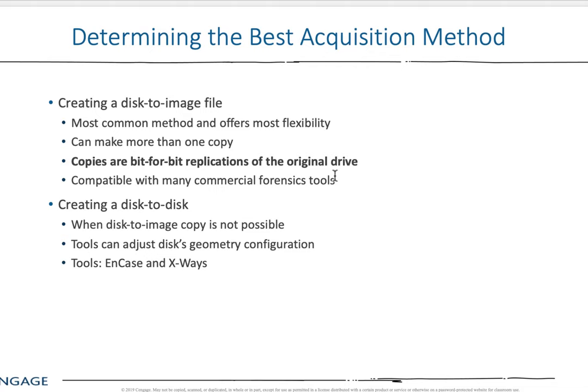Store your bit copy, and then work on a secondary copy or certain extractions. Everything needs to get documented as well. Copies are bit-for-bit replications of the original drive. What I usually do is make at least two of those copies — store one away with a hash value and tag it. The secondary one you can then sculpt. Oftentimes people will even use a third file for the actual evidence work, depending on your organization's requirements.